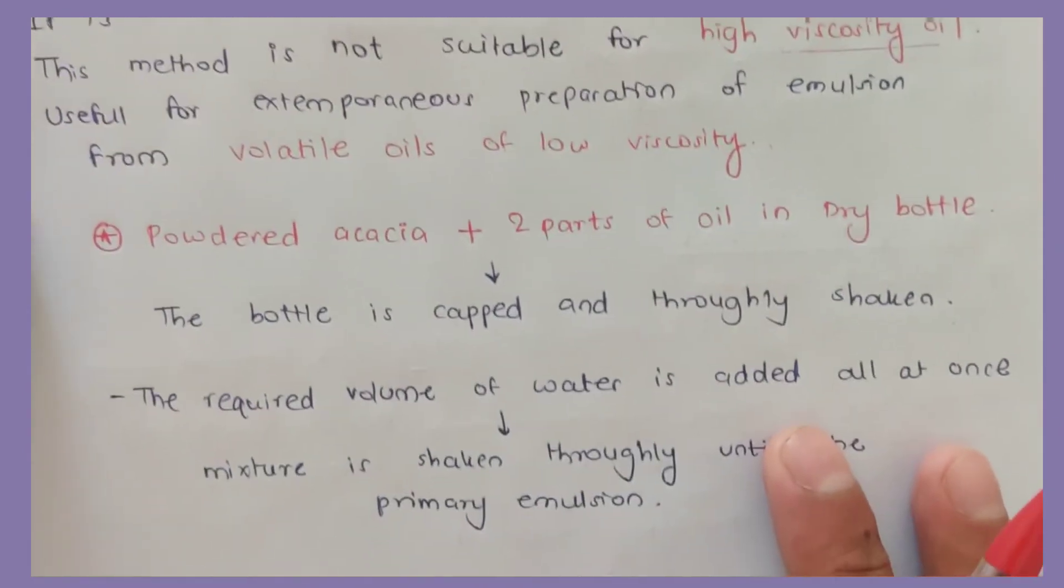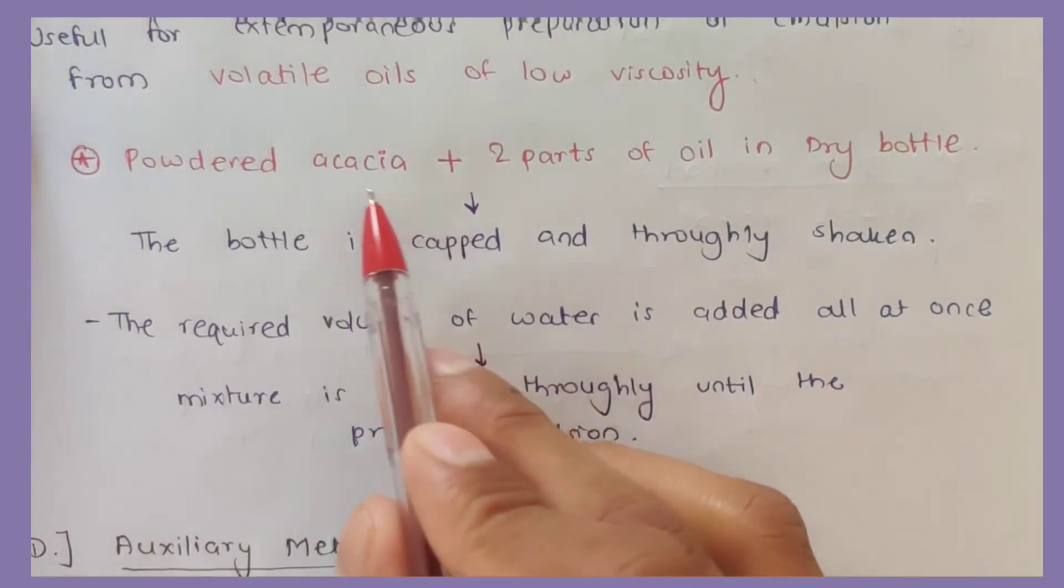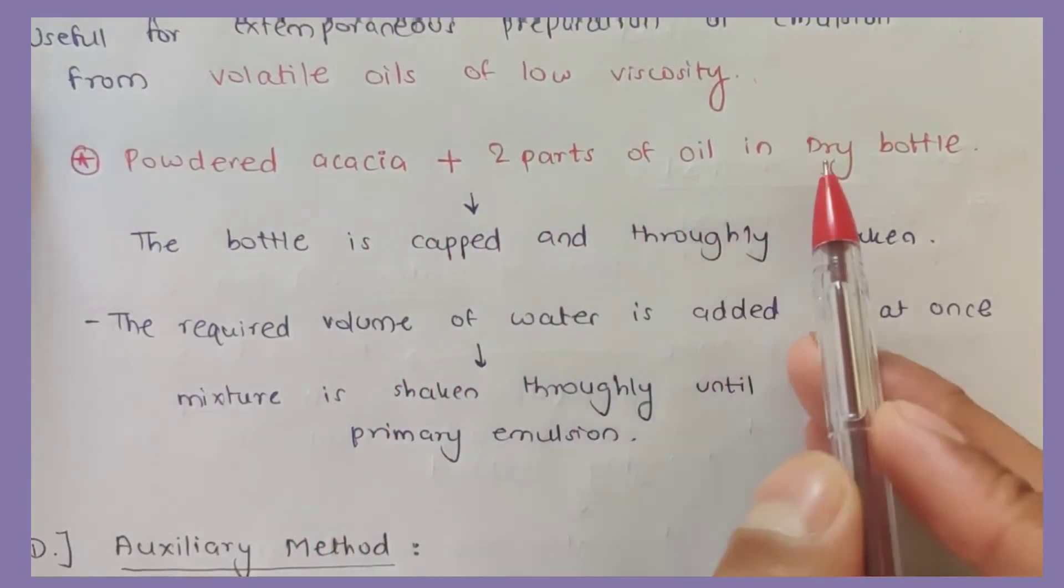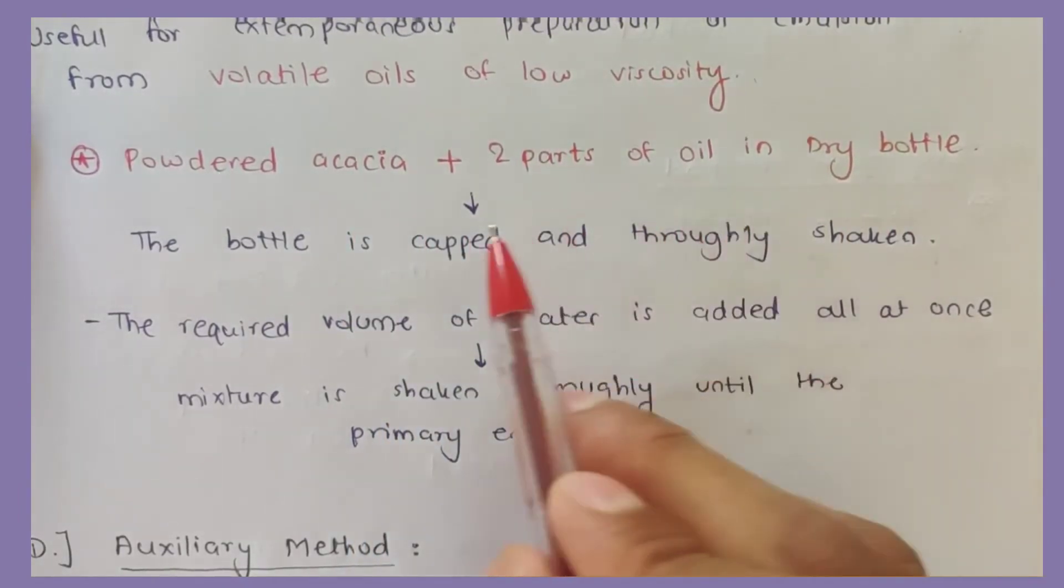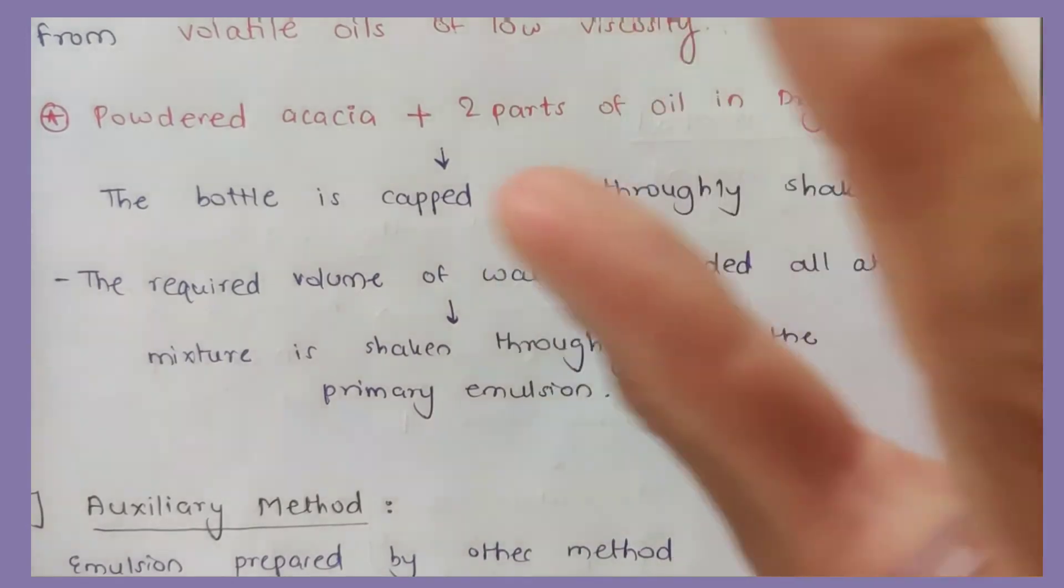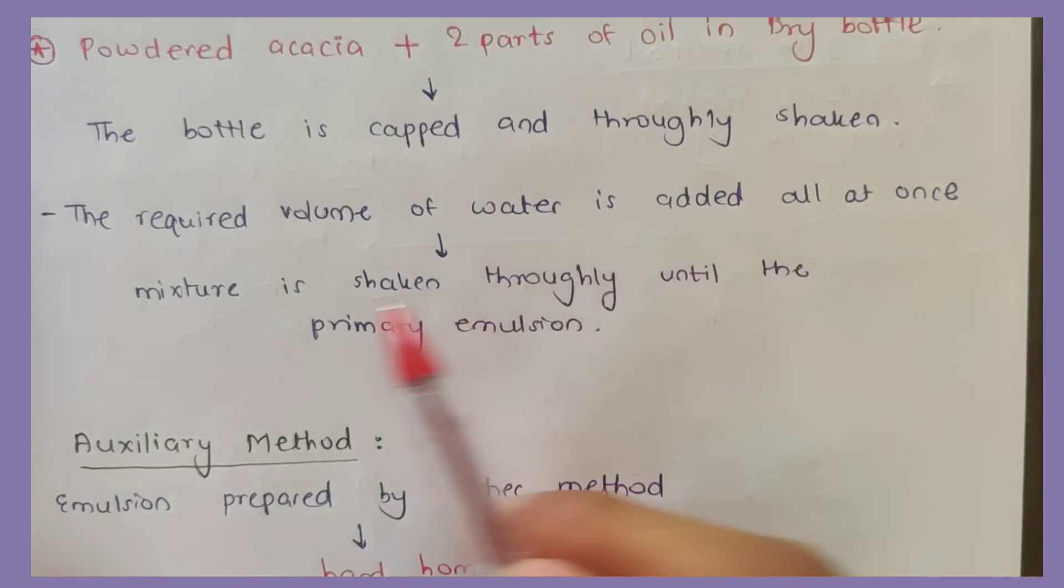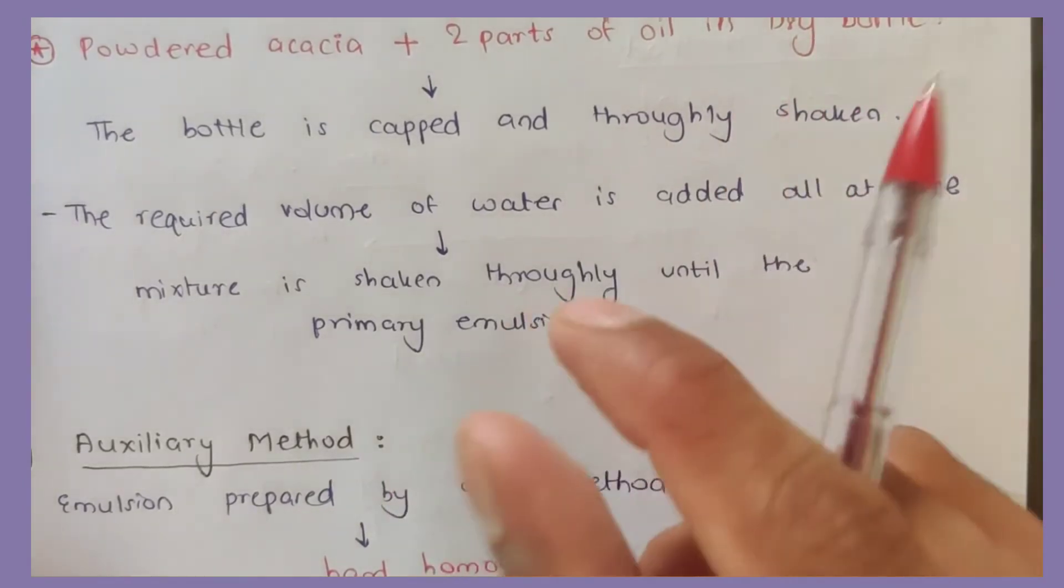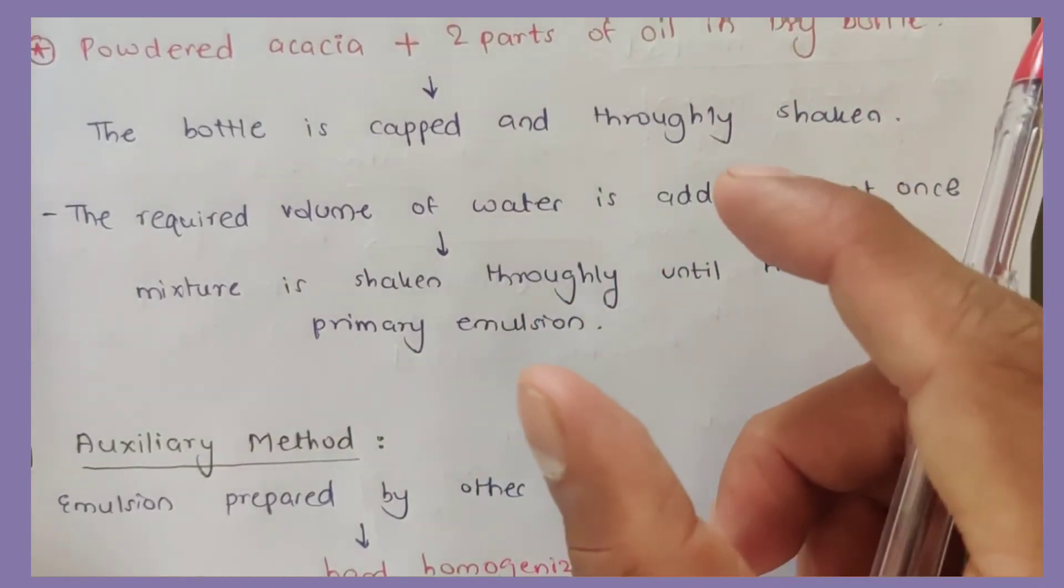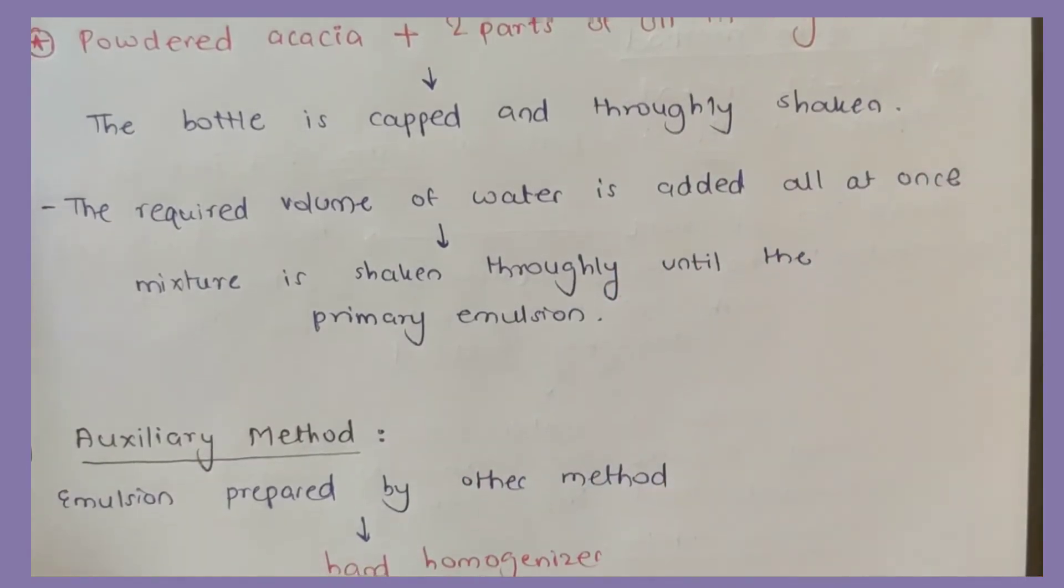It is useful for extemporaneous preparation of emulsion from volatile oils of low viscosity. Simply, powdered acacia and two parts of oil are added in a dry bottle. The bottle is capped and thoroughly shaken. The required volume of water is added all at once, and the mixture is shaken thoroughly until the primary emulsion is formed.